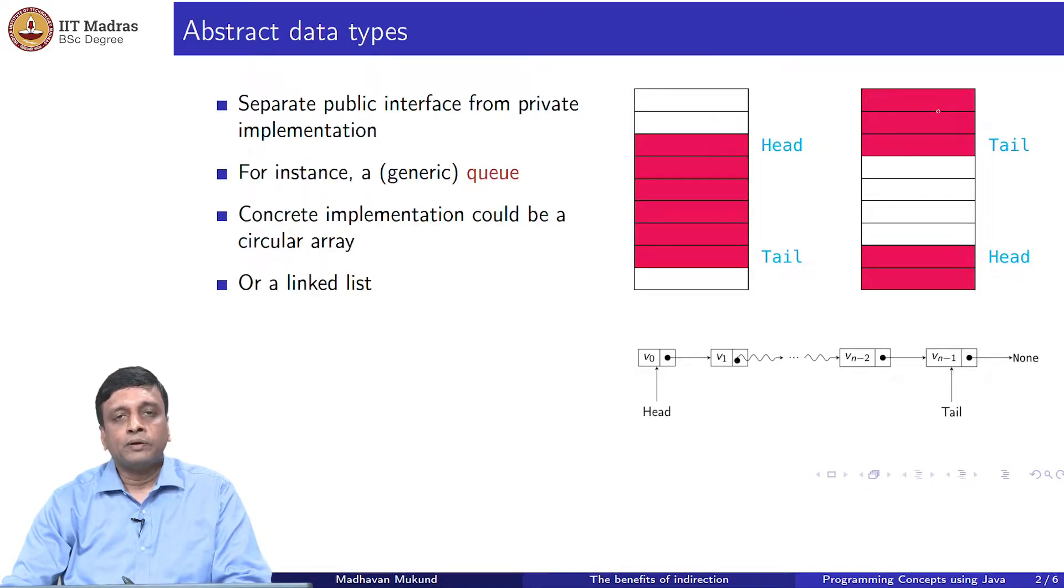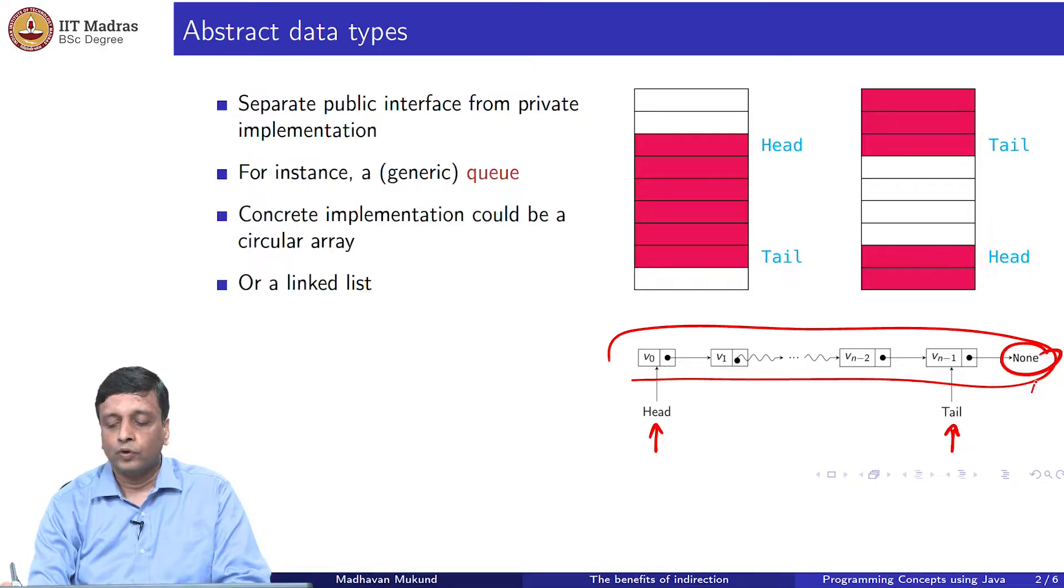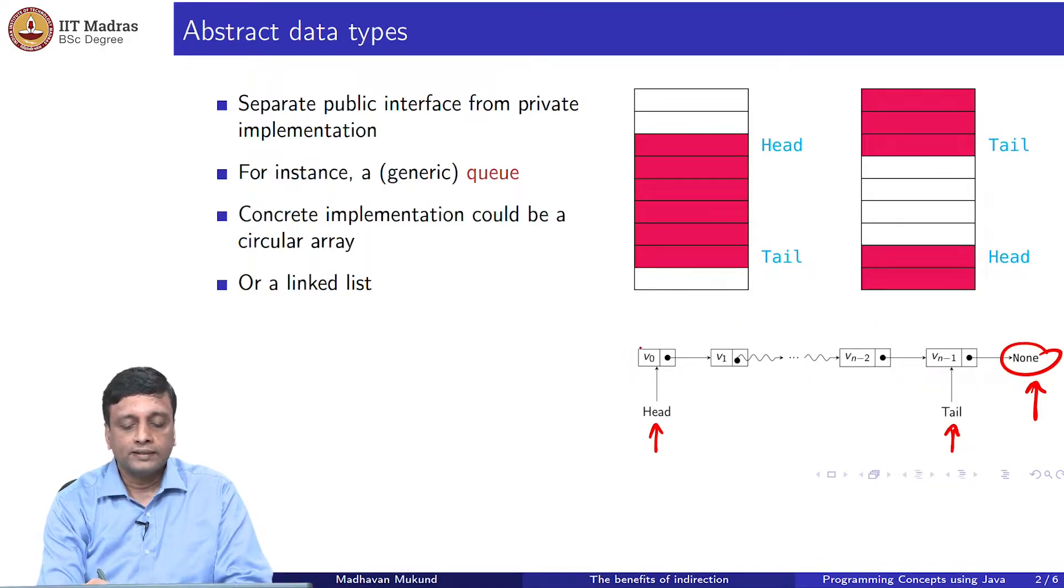Another way that we could implement a queue would be using what is called a linked list. We have a list of nodes and each node points to the next node and the head points to the first position, the tail points to the last position. If I add something, I will add a new node here. If I delete the head of the queue, if I remove something, then I will remove this one and make this head point here. These are two competing ways of implementing that abstract data type queue.